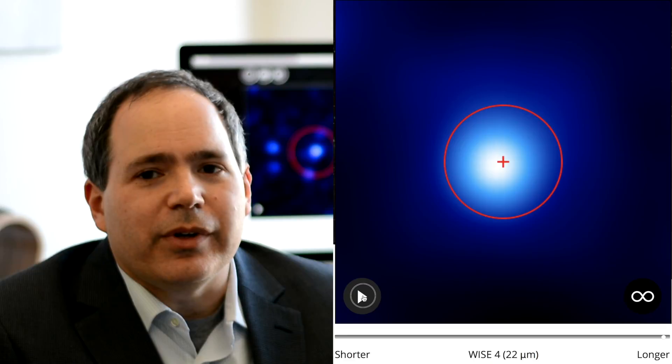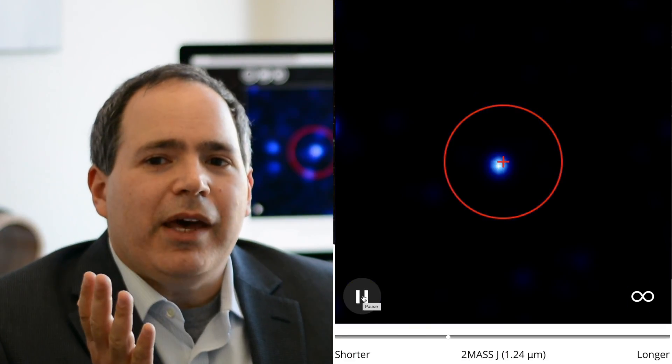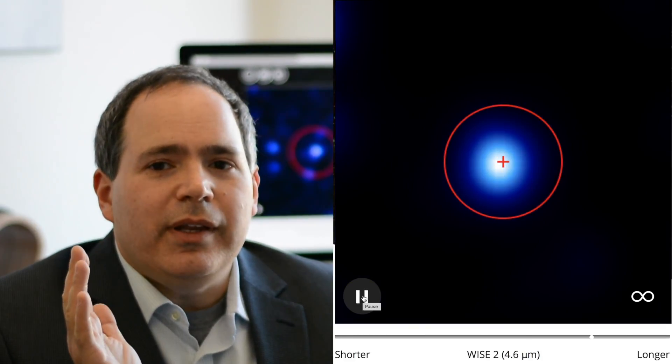At diskdetective.org, you'll watch 10-second videos of data from NASA's WISE mission and other observatories. These videos show the same astronomical source seen at 10 different bands. Looking at the same object at different wavelengths lets you see different things.